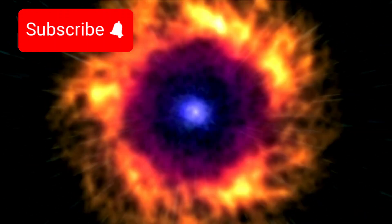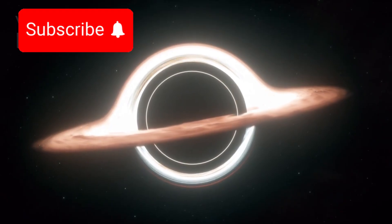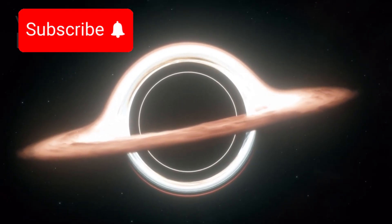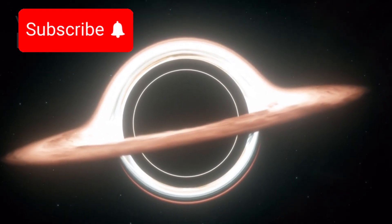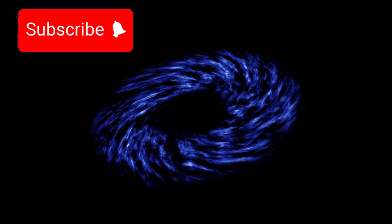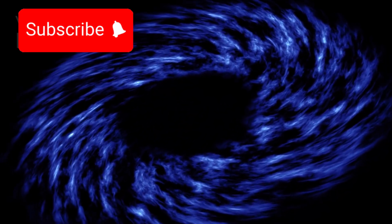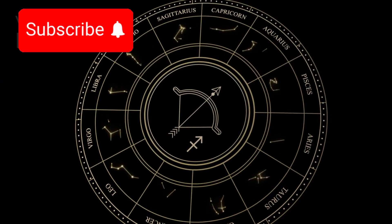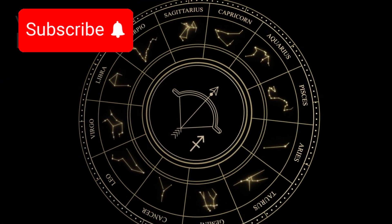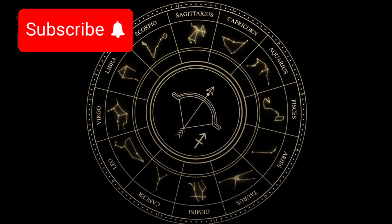This discovery opened the floodgates. Since then, astronomers have identified dozens of stellar mass black holes and several supermassive ones at the centers of galaxies. The Milky Way, our home galaxy, is no exception. At its very heart lies Sagittarius A*, a supermassive black hole with a mass over four million times that of our sun. Its gravitational grip shapes the orbits of stars in its vicinity, and it influences the dynamics of our galaxy in ways we are only beginning to understand.